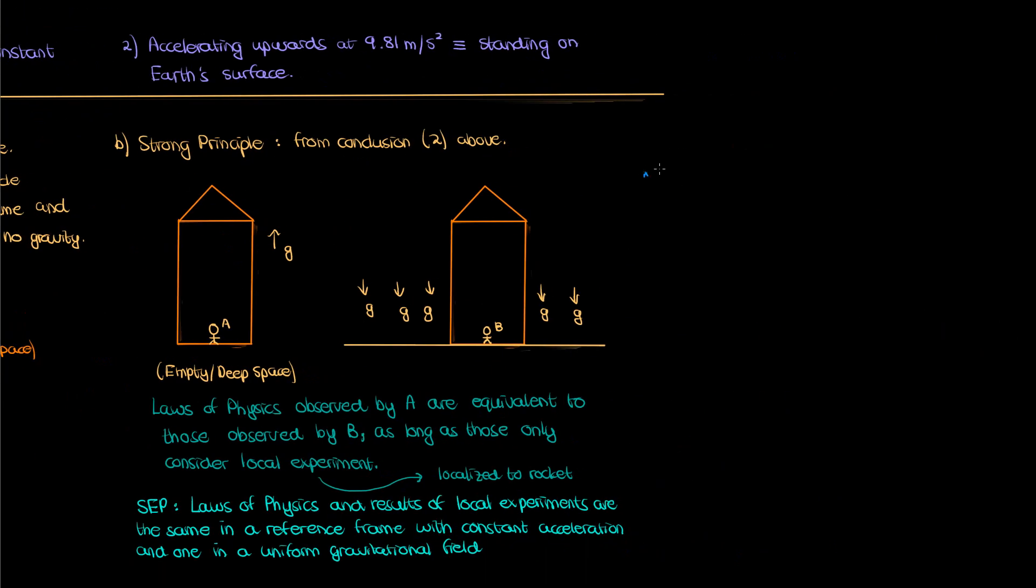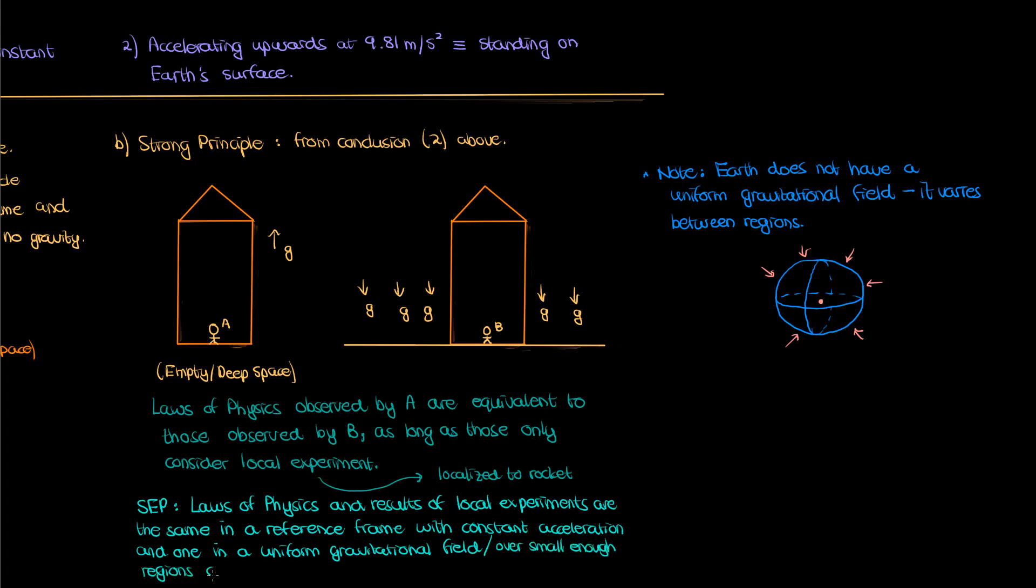Now the key phrase I've used here is uniform gravitational field. Over large space-time distances something like Earth is not a fully uniform gravitational field. Gravity varies slightly from region to region on Earth and the Earth is also spherical which means the gravitational field points inwards towards the center instead of being uniform and pointing in the same direction throughout. But the strong equivalence principle still holds even for Earth as long as you assume that you're working in small enough regions of space-time that these non-uniformities, these tidal effects, disappear.